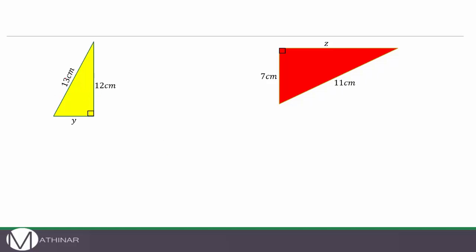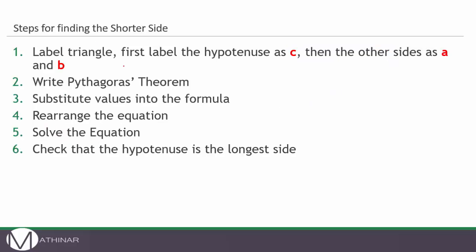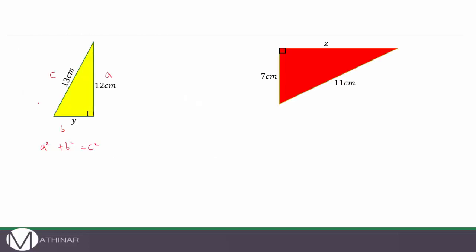Let's have a look at this yellow triangle. First we identify the right angle, and the side opposite the right angle we label as C because that's the hypotenuse. The other two sides we label as A and B — don't worry about the order as long as C is in the right place. We write down Pythagoras' Theorem: A squared plus B squared equals C squared. Substituting the values: A is 12 so A squared becomes 12 squared; B is Y so B squared becomes Y squared; C is 13 so C squared becomes 13 squared. 12 squared is 144 and 13 squared is 169. You can use a calculator if you need.